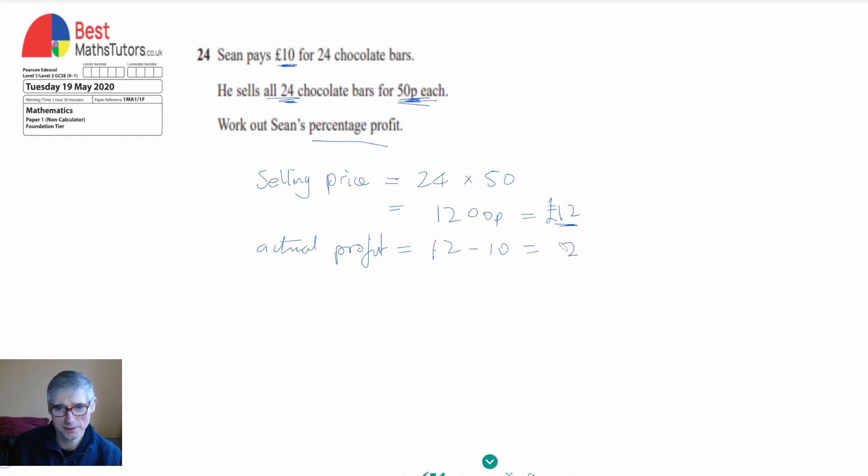To work out the percentage profit, we take the actual profit divided by what he paid (the cost price), then times that by 100. The actual profit was £2.